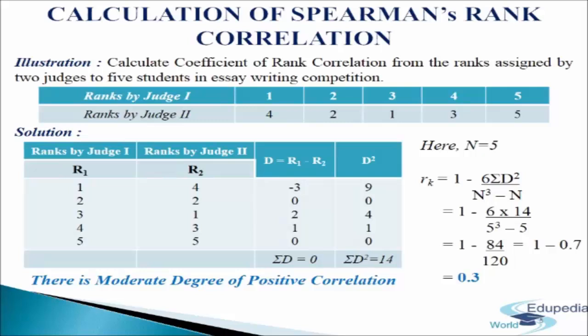Here n, the number of pairs, is 5. We put the values into the formula: rk equals 1 minus 6 sigma d square divided by n cubed minus n. After calculation, we get rk equals 0.3. So there is a moderate degree of positive correlation. This is how we calculate the coefficient of rank correlation when ranks are given.